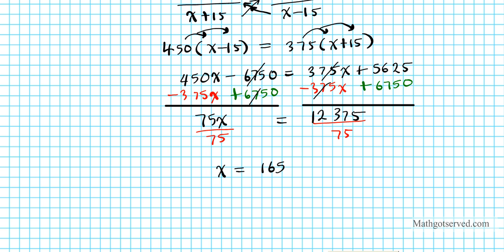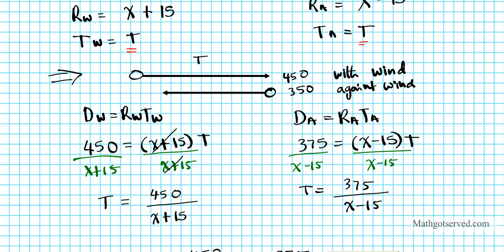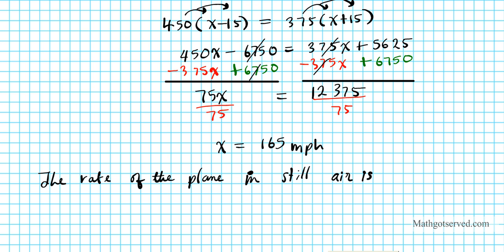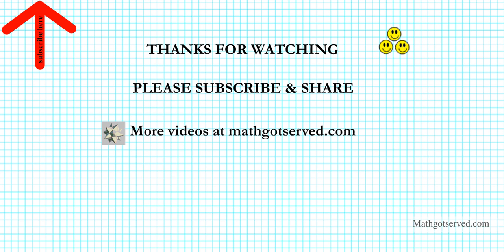So the rate of the plane in still air is 165 miles per hour. There you have it! Thanks so much for taking the time to watch this video. Feel free to subscribe to the channel and share this content with your friends. Thanks again and have a wonderful day.